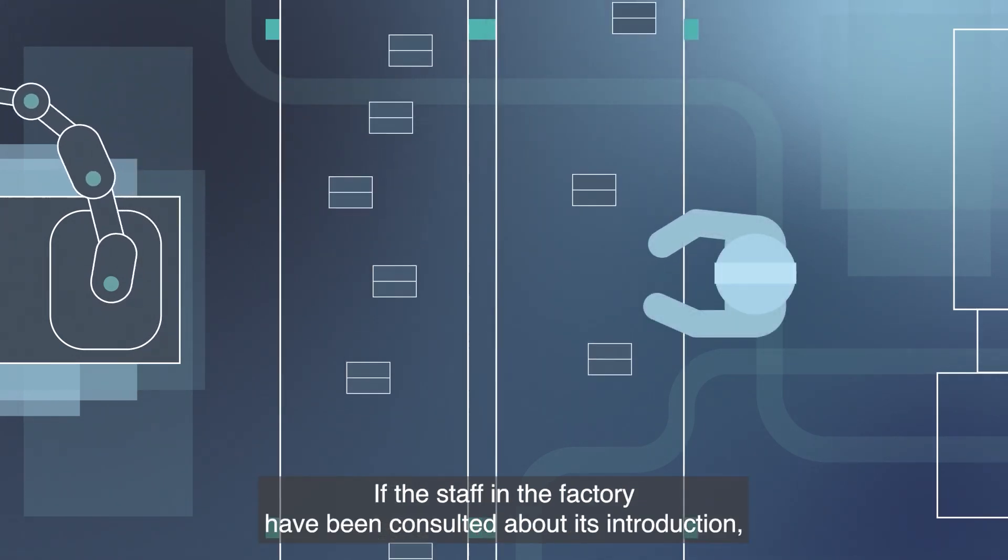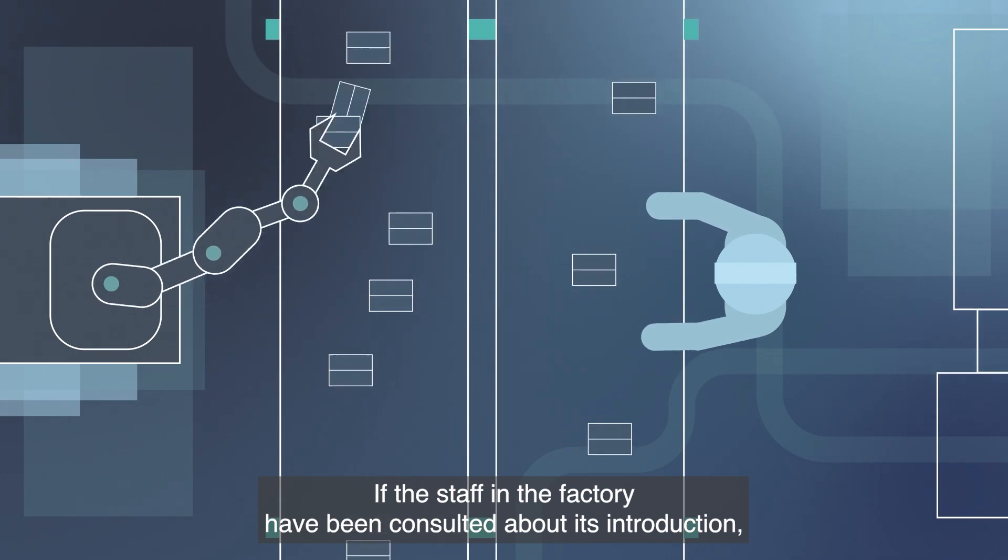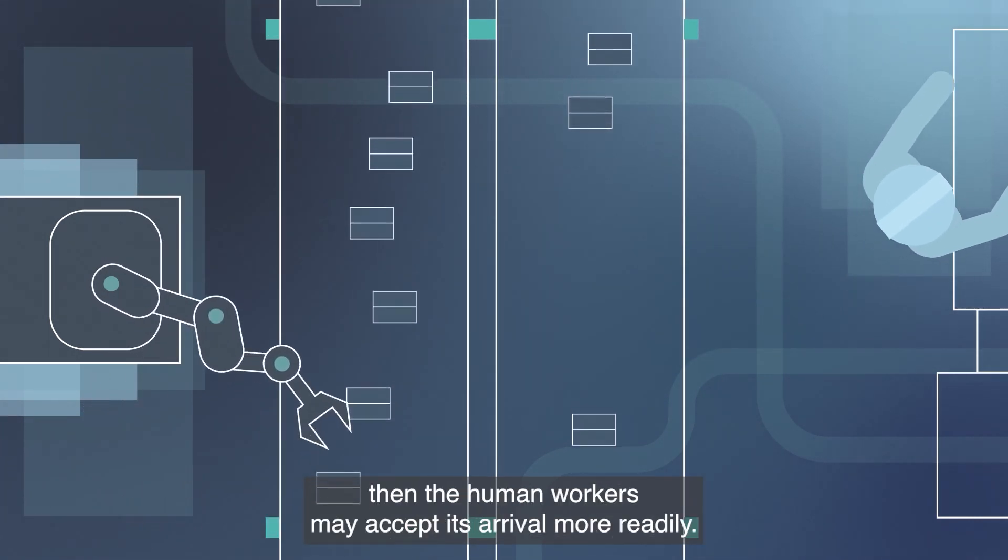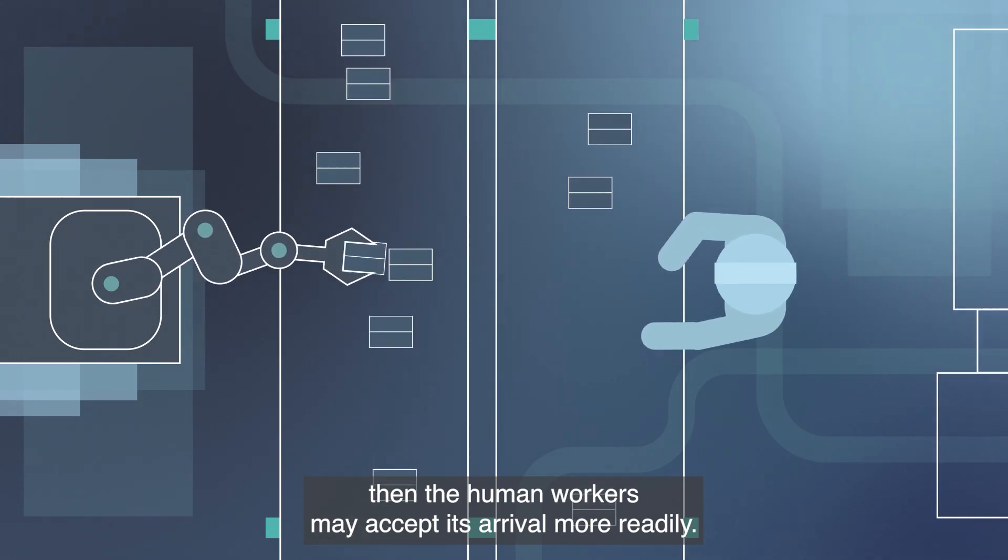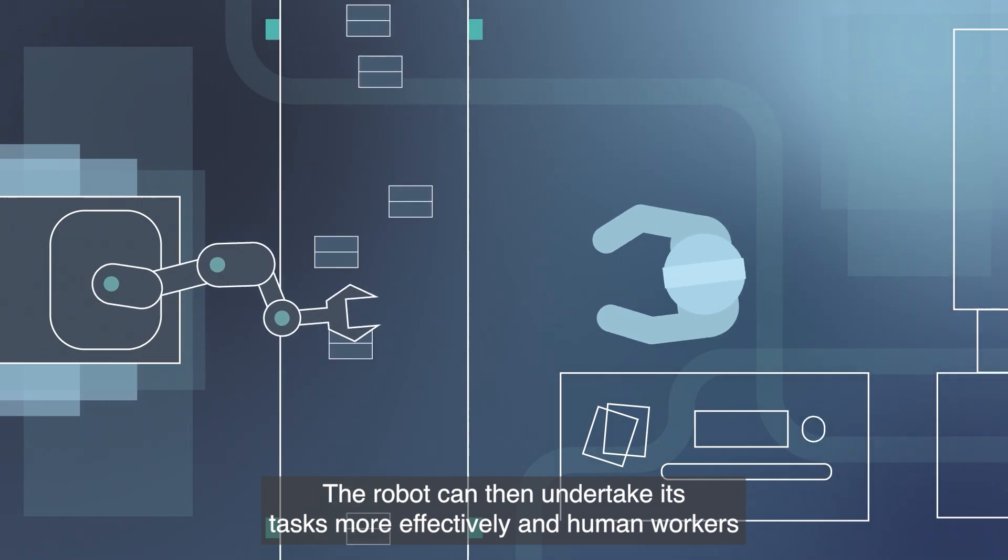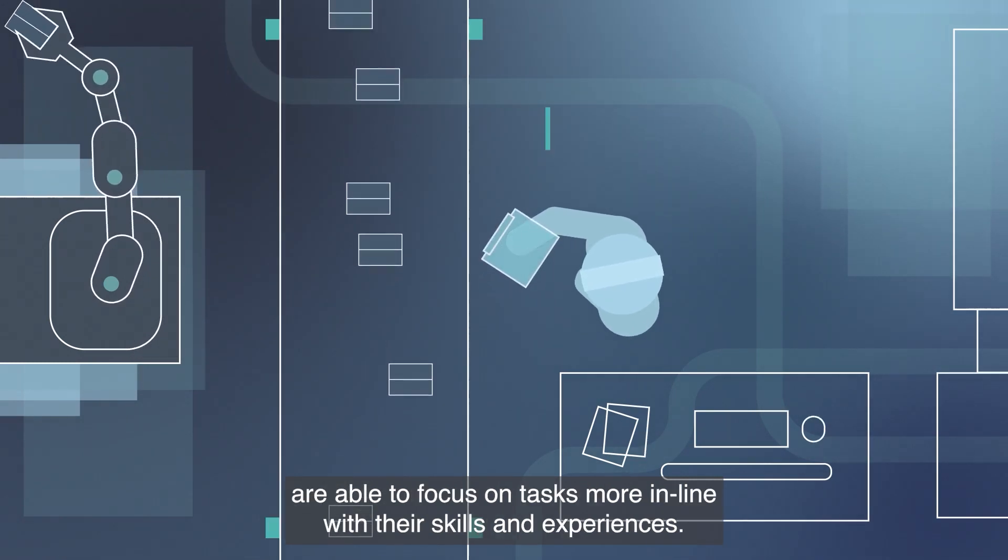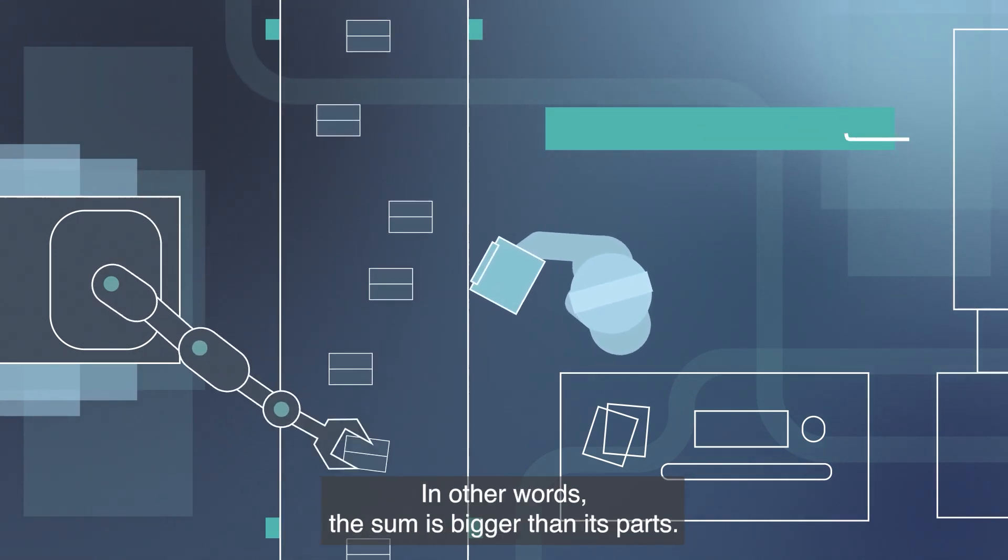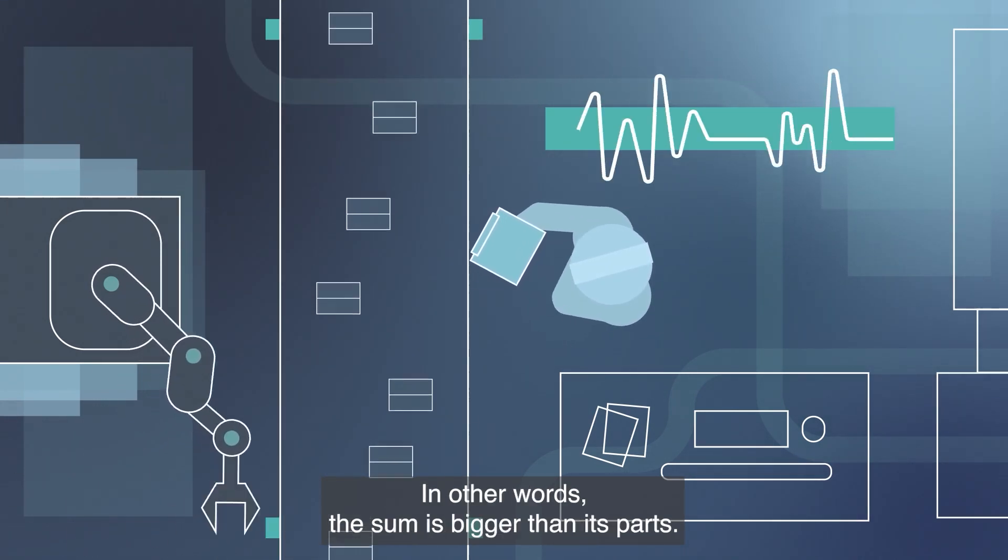If the staff in the factory have been consulted about its introduction and it was designed in collaboration with the existing team, then the human workers may accept its arrival more readily. The robot can then undertake its tasks more effectively, and human workers are able to focus on tasks more in line with their skills and experiences. In other words, the sum is bigger than its parts.